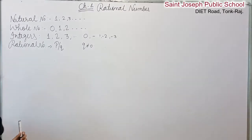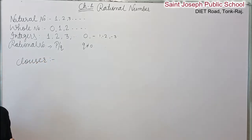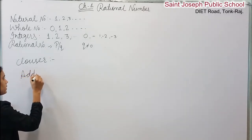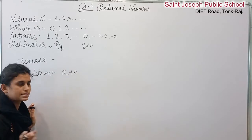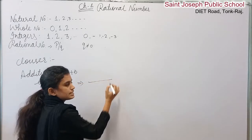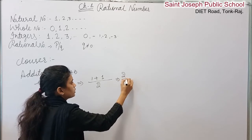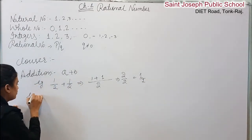The first property we have to learn is the closure property. In the closure property, we look at rational numbers. For example, 1 by 2 plus 1 by 2: the denominators are the same, so 1 plus 1 gives us 2 by 2, which equals 1. So the result is a rational number. Now let's take another example.